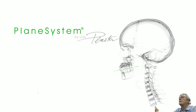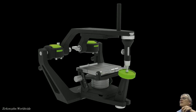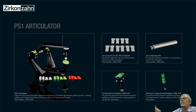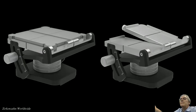The PS1 articulator, besides its elegant appearance, also has some very interesting features that we'll analyze further through the program today. It comes with a variety of inserts: six Bennett angle inserts for immediate side shift movement, six condylar inserts for protrusive movements, and an additional 12 inserts — six relating to the surtrusive movements and six to the detrusive movements — plus a custom incisal anterior guide table.